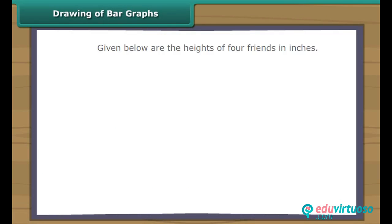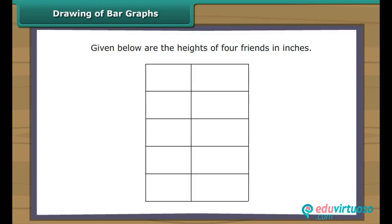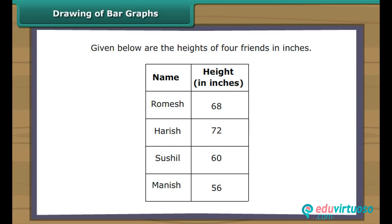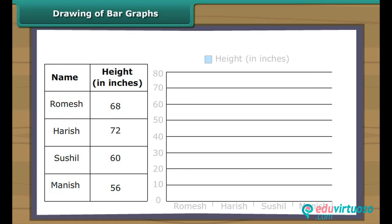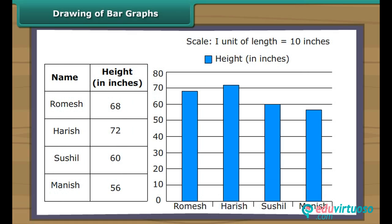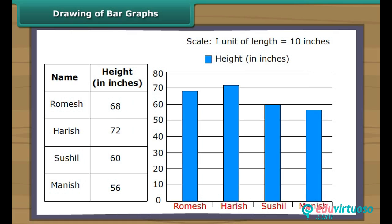Drawing of bar graphs: let us draw a bar graph with the help of the given data. As the heights are concentrated near 60, we measure 10 inches per unit of length. Now let us draw vertical bars — the height of the bars is decided by the heights of the boys in inches. The taller the boys, the taller the bars.